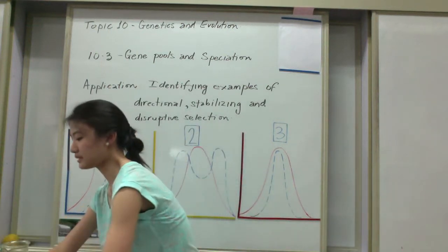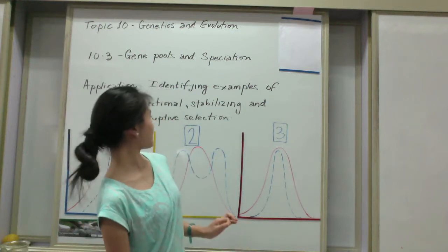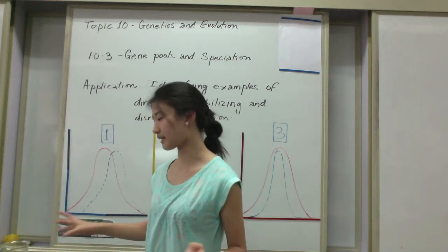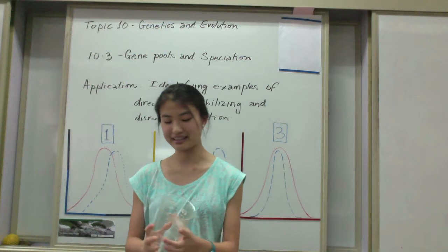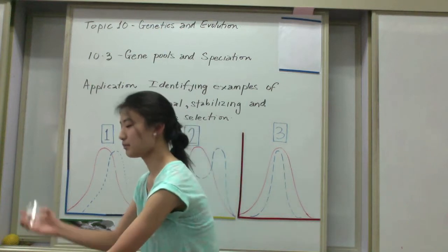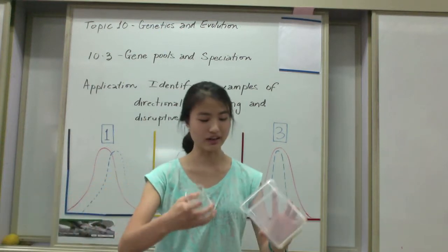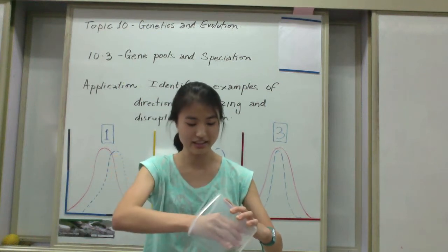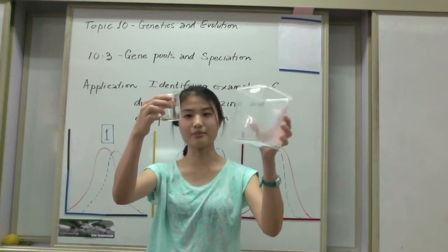So with this model we can say this represents disruptive selection, and this is because of why. So with the small beak we can see that it's very appropriate for getting smaller fruits and it's very efficient, so it can thrive in its environment.